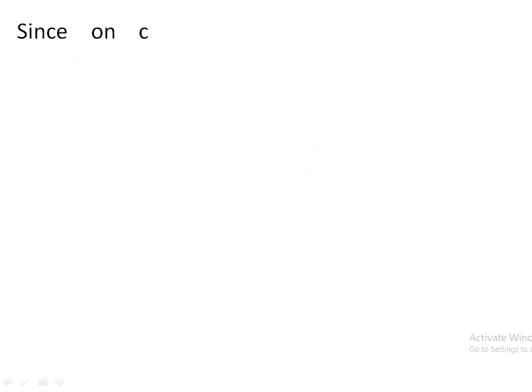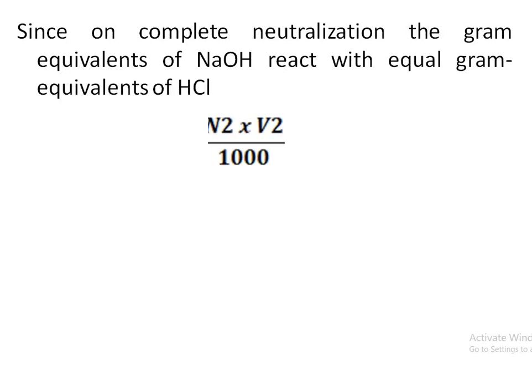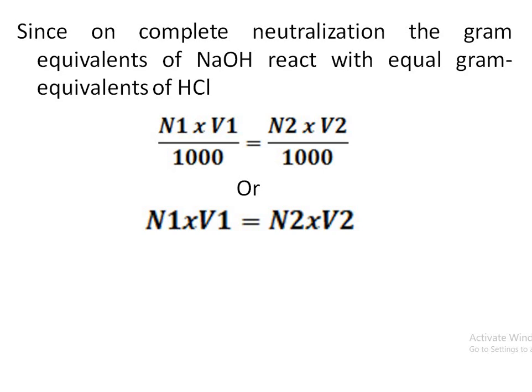Since on complete neutralization the gram equivalents of sodium hydroxide react with equal gram equivalents of HCl, we can say that N1 V1 divided by 1000 equals N2 V2 divided by 1000. Or by simplifying, we get the equation N1 V1 equals N2 V2. This equation is known as normality equation which is used to calculate normality of unknown solutions.